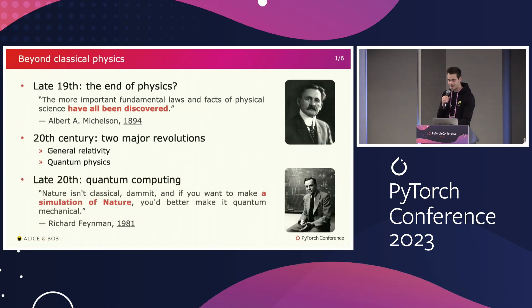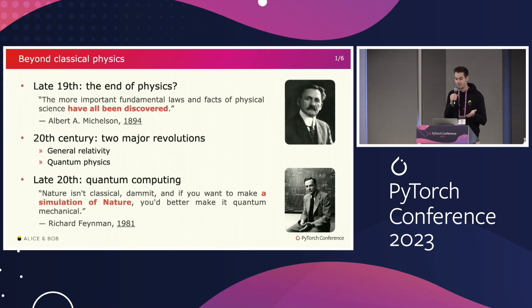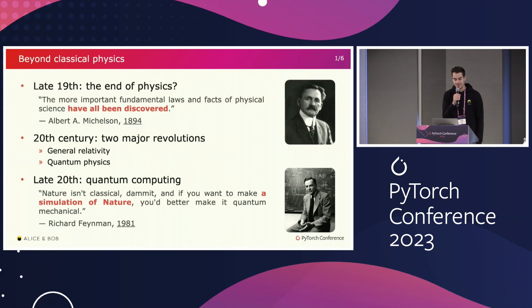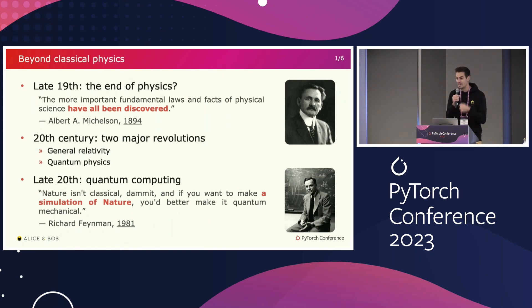People realized at the end of the 20th century that if we want to simulate nature, we need to simulate quantum physics. And to simulate quantum physics, we won't be able to use the classical computers we have. So Richard Feynman, a famous physicist, said: 'Nature isn't classical, damn it. And if you want to make a simulation of nature, you'd better make it quantum mechanical.' This is how the idea of quantum computers and quantum computing was born — the idea that we need a new machine to simulate nature.